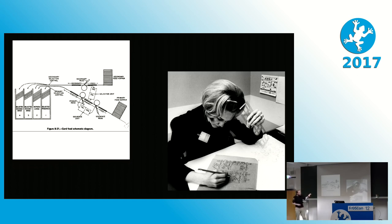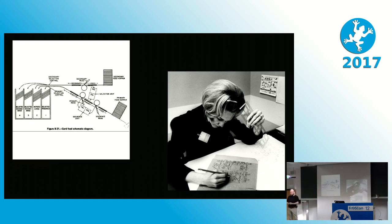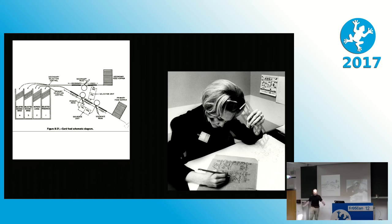We have components — little pieces of software with input ports and output ports — that execute some logic. Then we have a graph that tells how data flows from one component to another. That's basically all that flow-based programming is about.